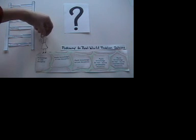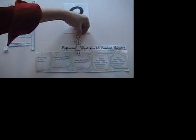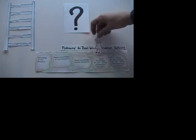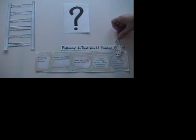The pathway begins with knowledge in one discipline, apply the knowledge in one discipline, apply the knowledge across disciplines, apply knowledge to real-world predictable situations, and finally apply knowledge to real-world unpredictable situations.